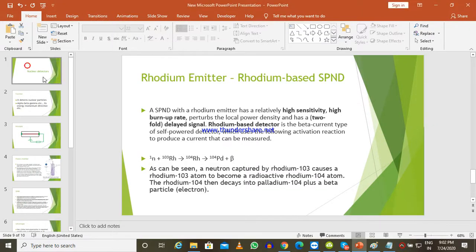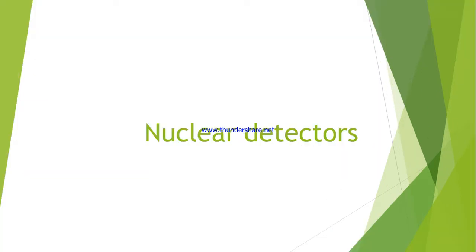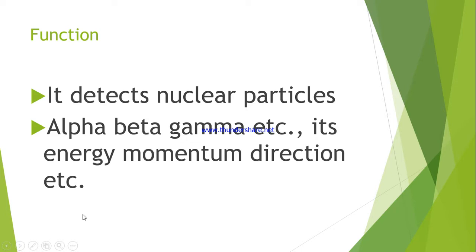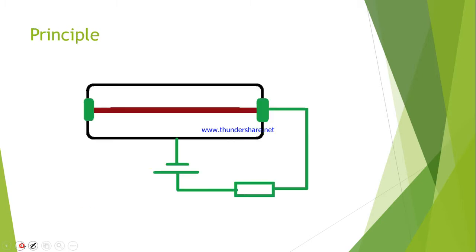Good evening. I will discuss nuclear detectors. The function of nuclear detectors is to detect nuclear particles — it may be alpha, beta, gamma, or neutron — with high kinetic energy. Basically, it detects the number of particles, their energy, momentum, and direction. I am going to explain the very basic principle of nuclear particle detection.